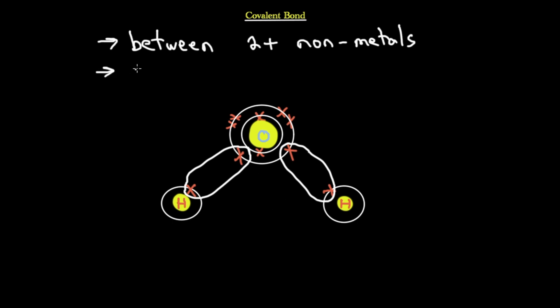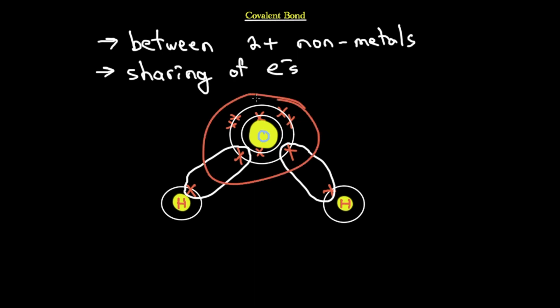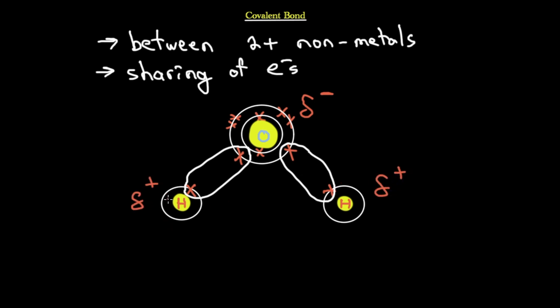Covalent bonds do not involve full transfer of electrons — they involve sharing, which does not lead to full formal charges. Instead, we get partial charges. Since oxygen is more electronegative, it has a greater tendency to attract the electrons, so the shared electrons reside with oxygen more often, giving it a partial negative charge, while the two hydrogens carry partial positive charges. This becomes important when we later discuss intermolecular bonds, specifically hydrogen bonds.